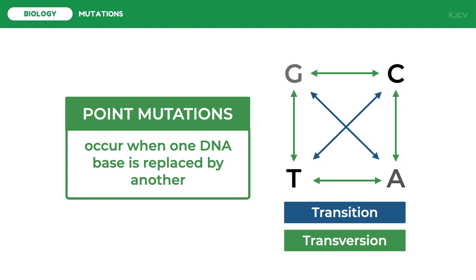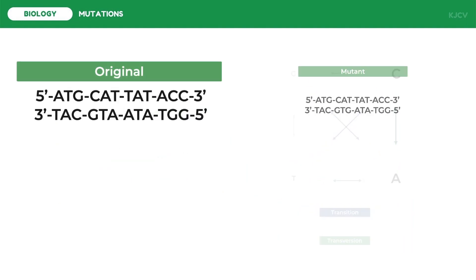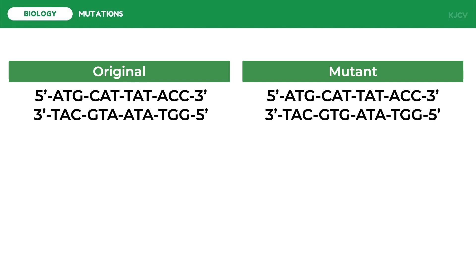The effects of point mutations may be seen on the polypeptide product of the translation process. Suppose we have these original and mutant DNA strands. The adenine of the second codon of the 3' to 5' strand undergoes a transition — instead of adenine it became guanine. A mismatch error occurred in which guanine paired with thymine, an anomalous base pairing caused by tautomeric shifts. To see the effect of this mutation we express the gene starting with transcription, using the 3' to 5' template strand.